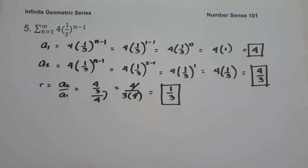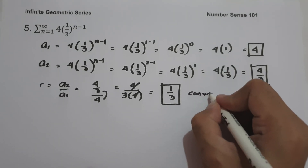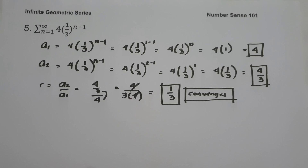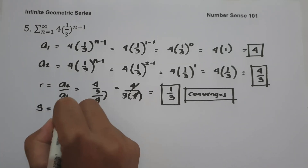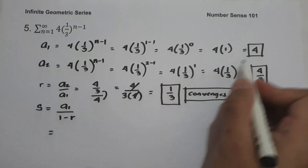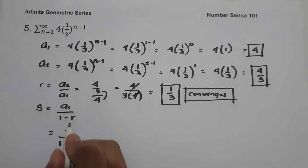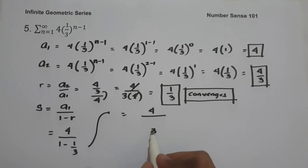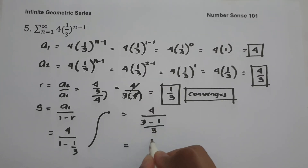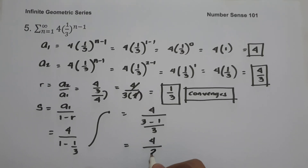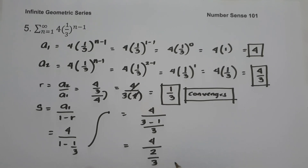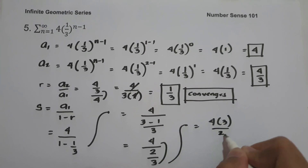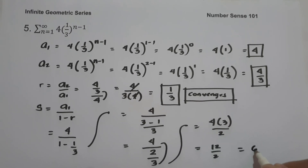Since the common ratio is less than 1, the series is converged and we can identify the sum. Using S equals a sub 1 over 1 minus r: 4 over 1 minus 1/3. Rewriting with denominator 3 gives 4 over (3 minus 1)/3, which is 4 over 2/3. Multiplying: 4 times 3 divided by 2 equals 12 divided by 2, which is 6. Our answer is 6.